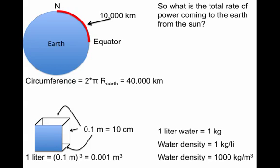So what is the total rate of power coming to the earth from the sun? Please calculate that and verify that it is approximately 162,000 terawatts.